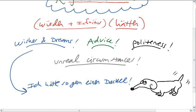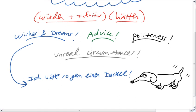Ich hätte so gern einen Dackel. Ich hätte so gern ein Haus in Hawaii. Oder ich hätte so gern ein großes Auto. Oder ein Elektroauto. Stromauto. Something like that. Whatever you would like to have.